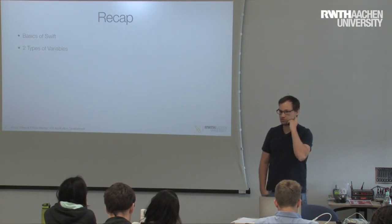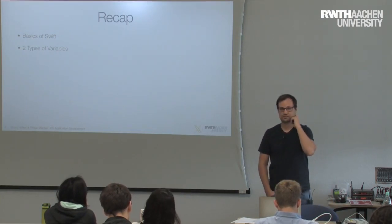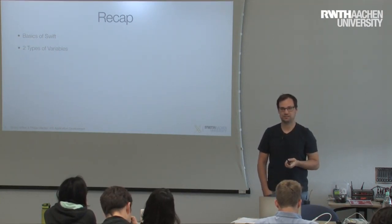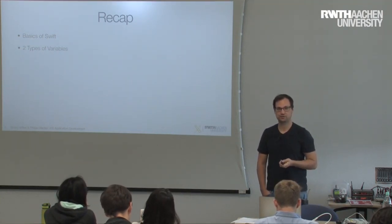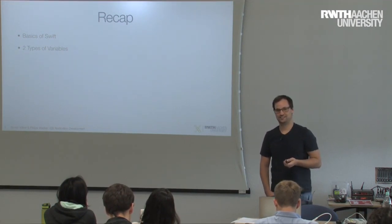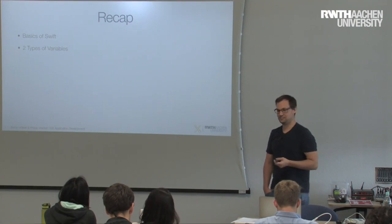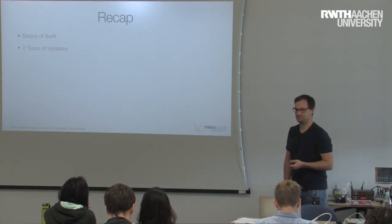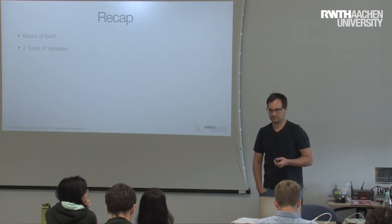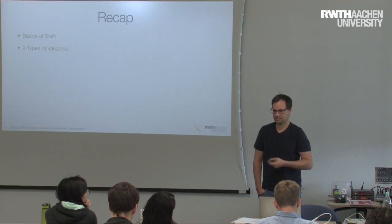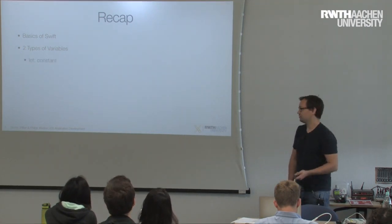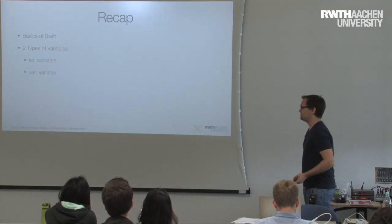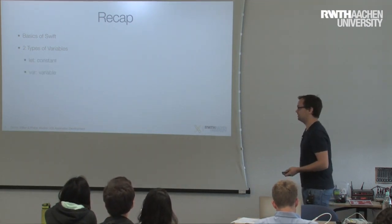We talked about two types of variables. Can somebody remember what they were and what the differences are? Yeah — let and var, these are the two types. Let is a constant, and var is a variable — so let is constants and var is a variable.